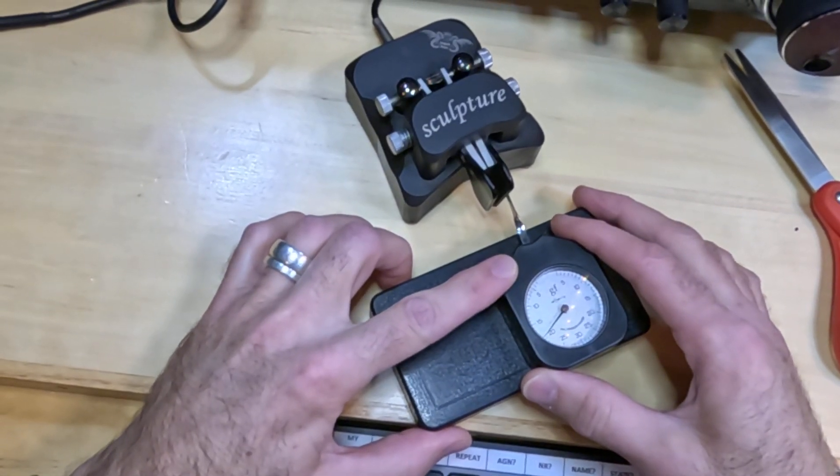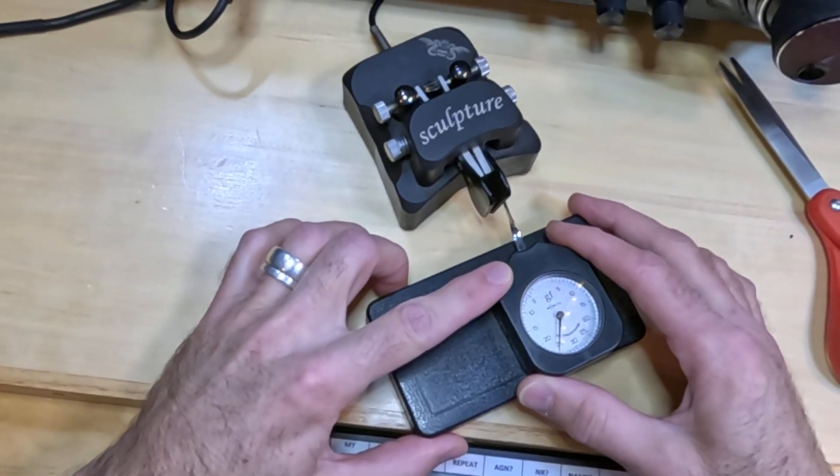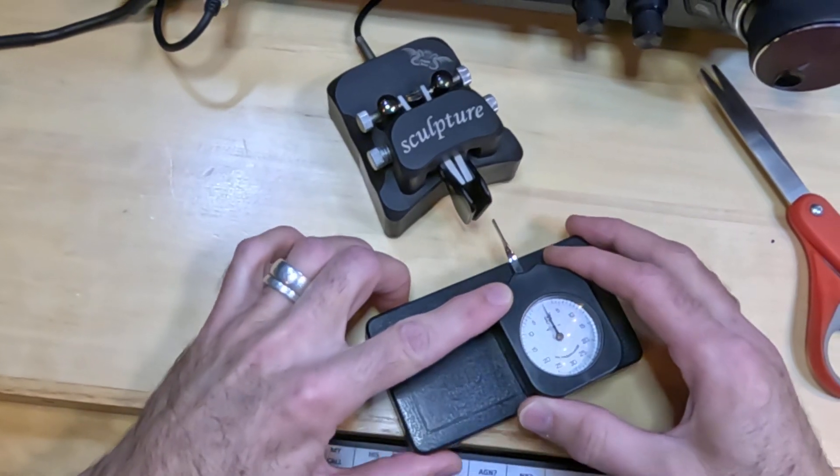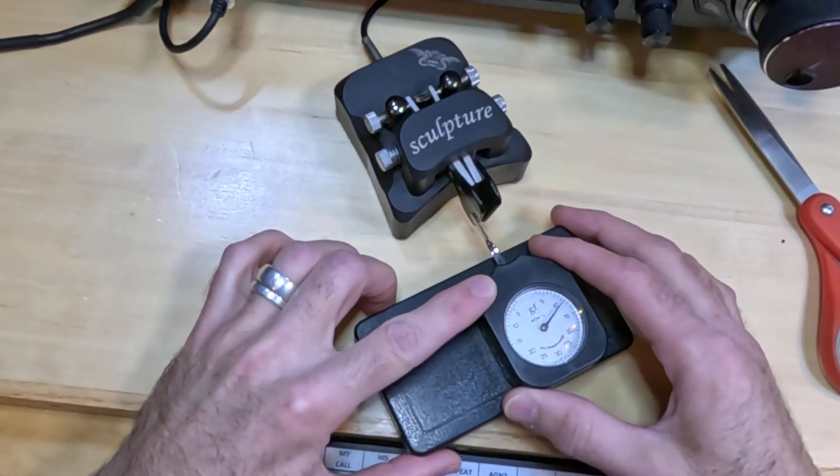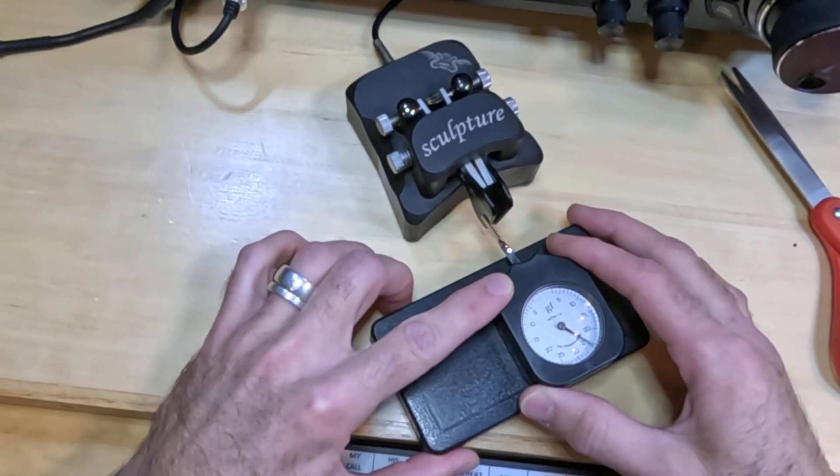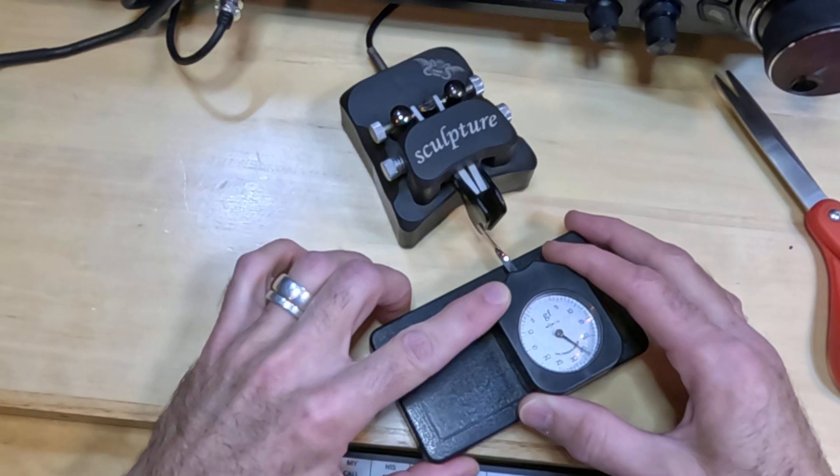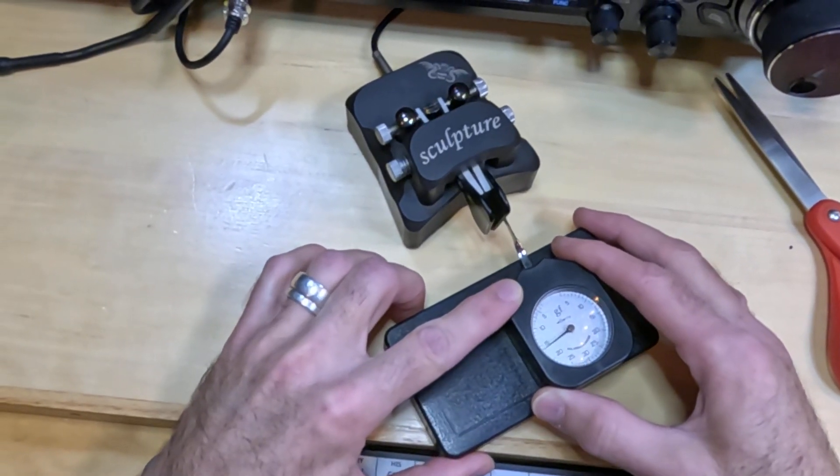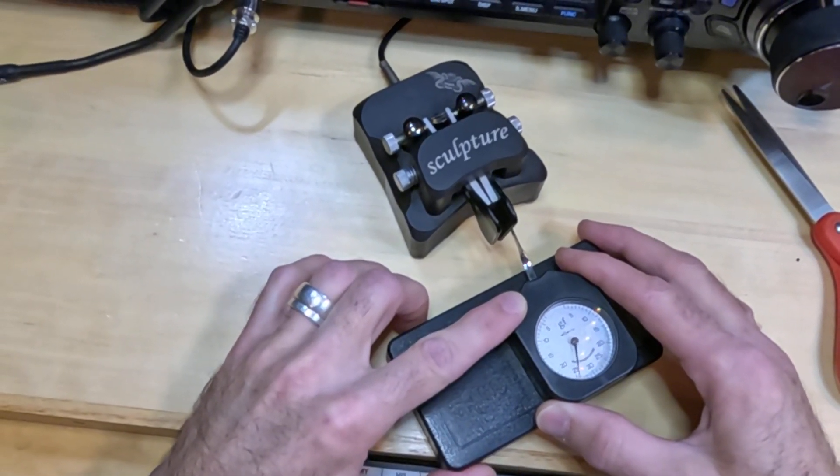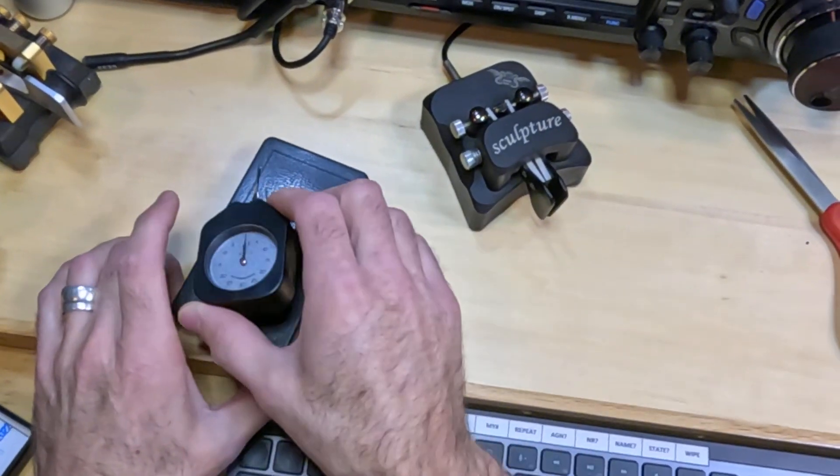So basically I just take the gauge, set it on the lid of the box so it's hitting it about the right point on the paddle and then measure the tension. I like 25 grams. So that's right at 25, and that's right at 25. All right.